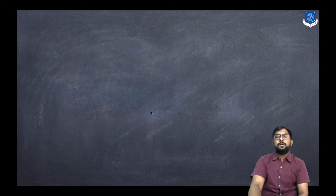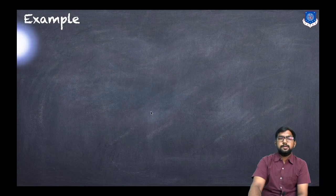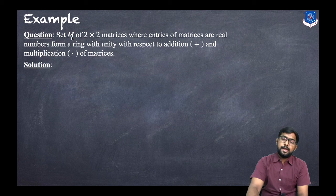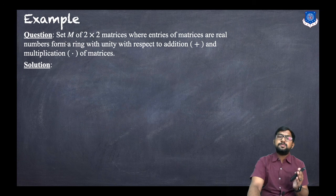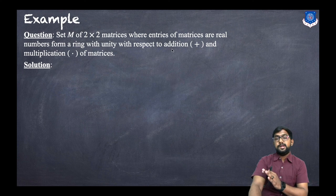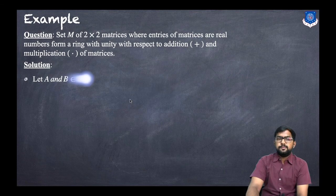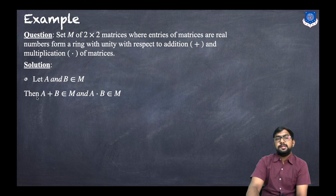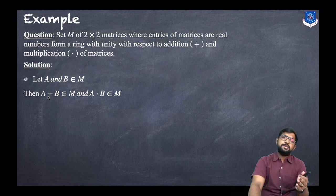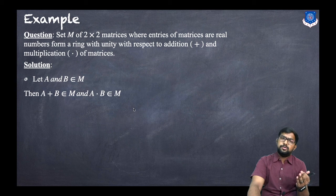Now let us discuss an example. The question is: does the set M of 2×2 matrices with real number entries form a ring with unity with respect to matrix addition and multiplication? Let A and B belong to M. Then A + B and A·B both belong to M.